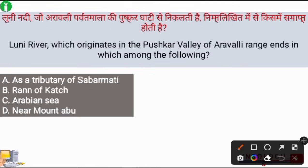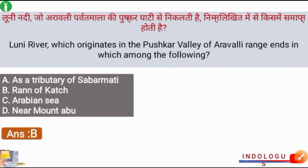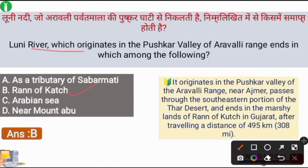Next question: The Looni River, which originates in the Pushkar valley of the Aravalli range - where does it end? The Looni River is the longest river in Rajasthan and can be considered its lifeline. The right answer is option B: the Rann of Kutch. It originates near Ajmer, passes through the southeastern portion of the Thar Desert, and ends in the marshlands of the Rann of Kutch in Gujarat after traveling 495 km.